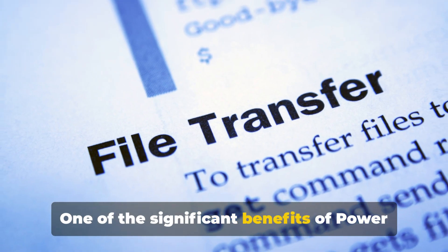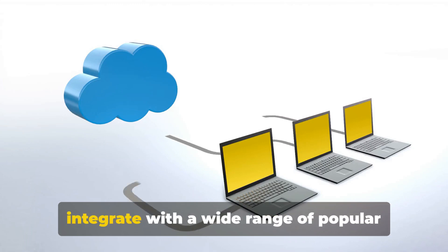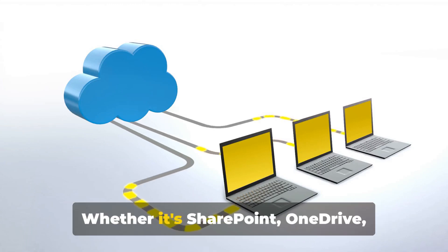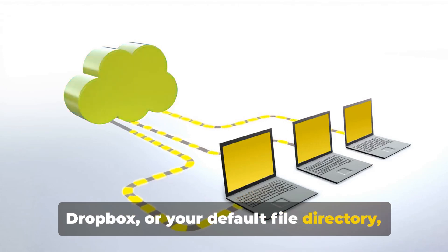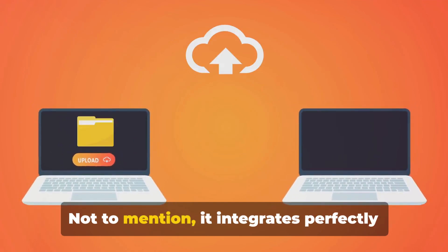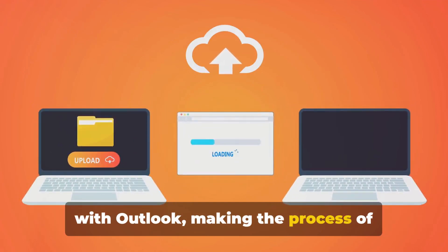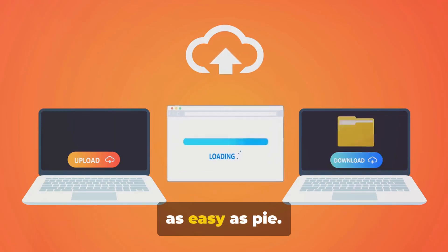One of the significant benefits of Power Automate is its ability to connect and integrate with a wide range of popular apps and services. Whether it's SharePoint, OneDrive, Dropbox, or your default file directory, Power Automate can seamlessly connect with it. Not to mention, it integrates perfectly with Outlook, making the process of sending files from a directory to Outlook as easy as pie.